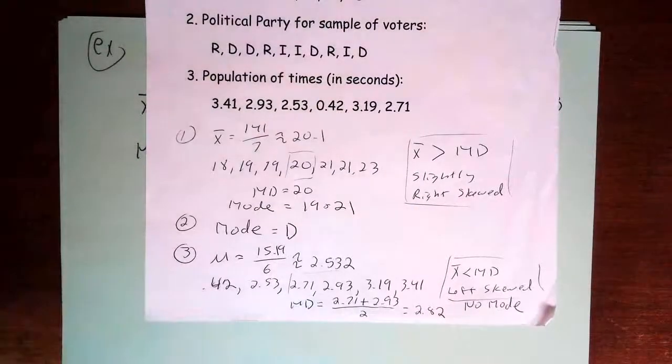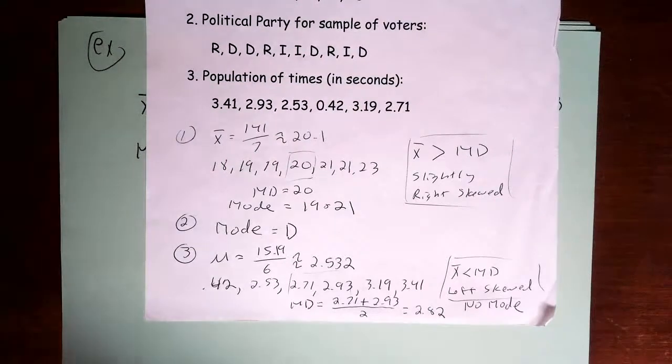Now, the second data set is qualitative nominal data, and so the only measure of center that makes sense is the mode, and in that case, you get D for Democrat.